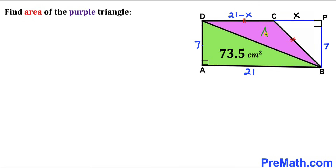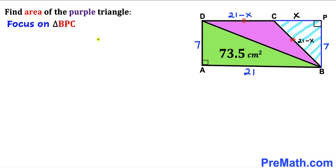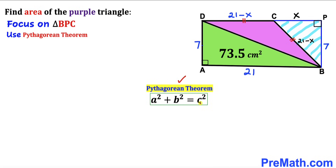For the purple triangle, side length CD equals side length BC since it is isosceles. We know CD is 21 minus X, so BC is also 21 minus X. Focusing on right triangle BPC and applying the Pythagorean theorem — a squared plus b squared equals c squared — with CP as side a (which is X), BP as side b (which is 7), and BC as the hypotenuse c (which is 21 minus X): X squared plus 7 squared equals (21 minus X) squared.